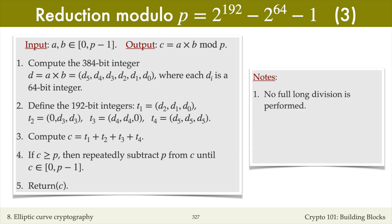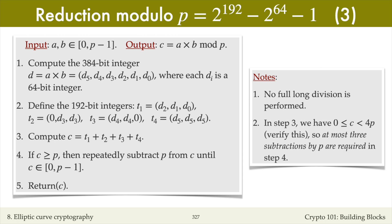Note that the algorithm does not use any explicit long divisions. Also, in step three, c is less than 4p, so in step four we perform at most three subtractions of p from c. Thus the computation of d modulo p in steps three and four requires only three additions of 192-bit numbers and at most three subtractions by p.